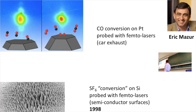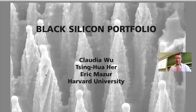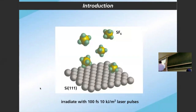He found a cylinder of SF6 and a wafer of silicon. They did the same thing as before: they put the silicon wafer in a vacuum, added some SF6 and some oxygen, and hit it hard with a femtosecond laser. Then the silicon turned black.